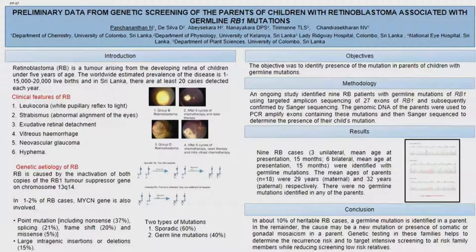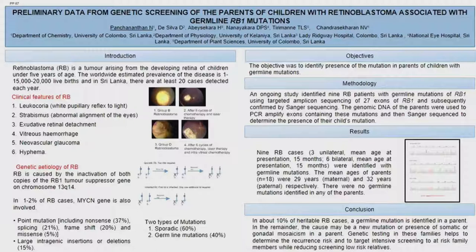In sporadic mutation, the mutations are at the somatic level and both mutations are present only in the retinal tumour cells. But in the germline mutation, the first mutation is present in all cells of the body and the second mutation will be germline.